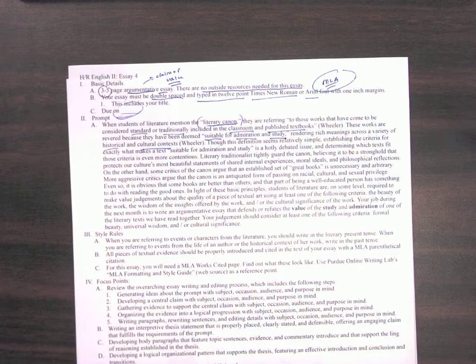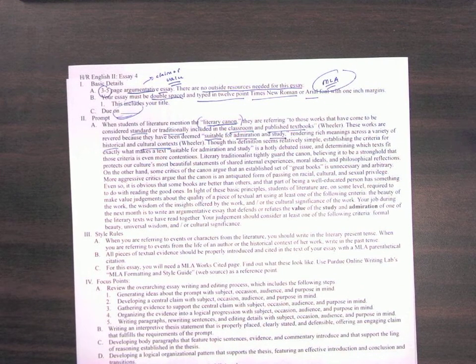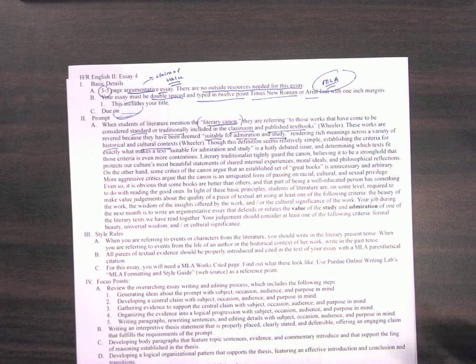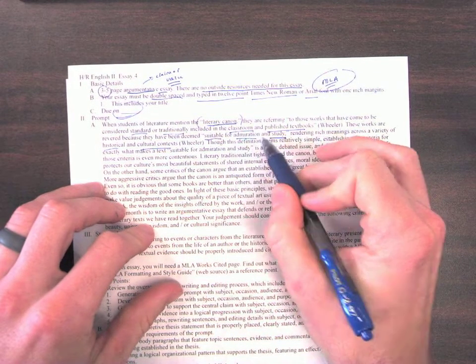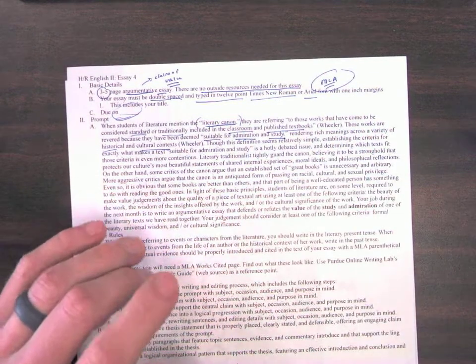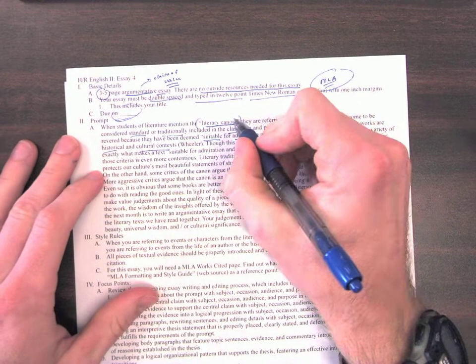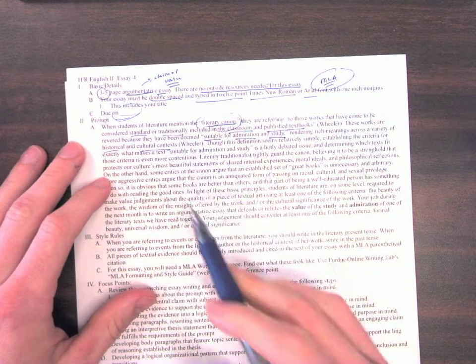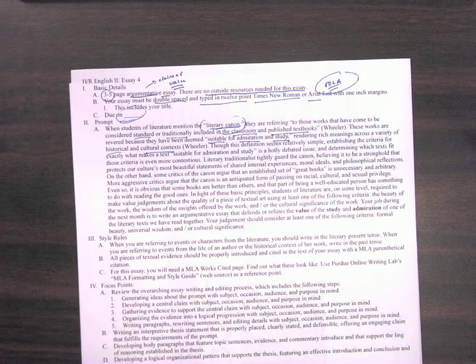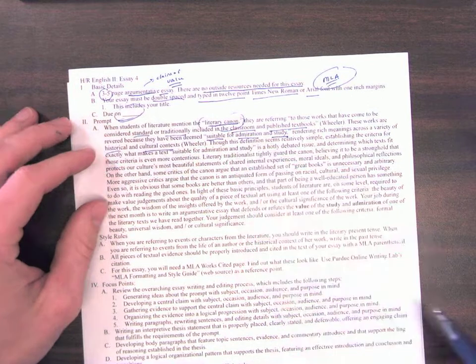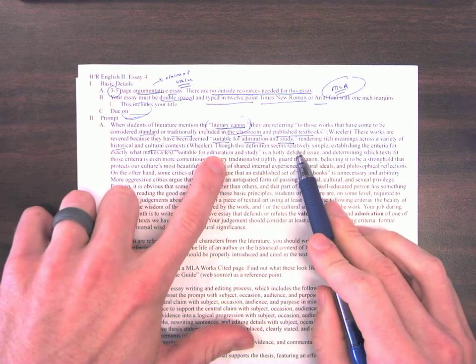An example of a book that is suitable for admiration and study that is a part of our literary canon is a book like Frankenstein. It was published in the early 1800s and it is still being read in the 21st century because it has been deemed, despite the fact that it is old, it has been deemed valuable and suitable for admiration and study. Same with the works of Shakespeare. Same with the works of Sophocles, with Oedipus the King. Same with the work of Virgil in the Aeneid. Same with the work of Dante in the Inferno. These are old books that are part of what we call the literary canon.